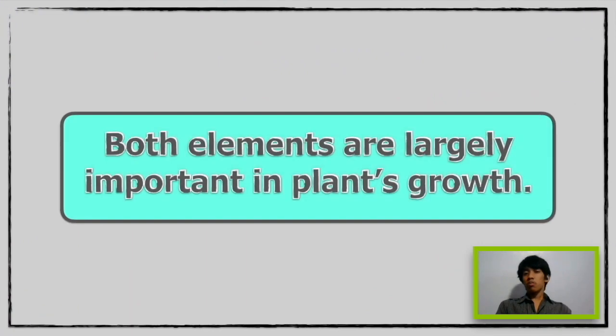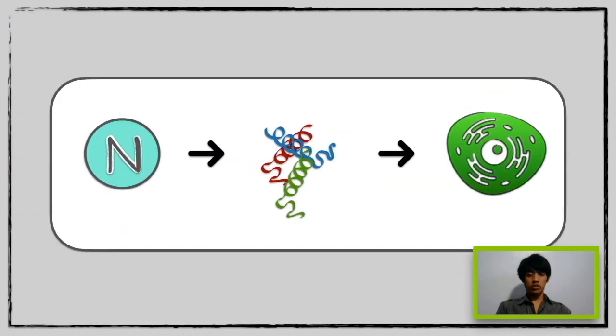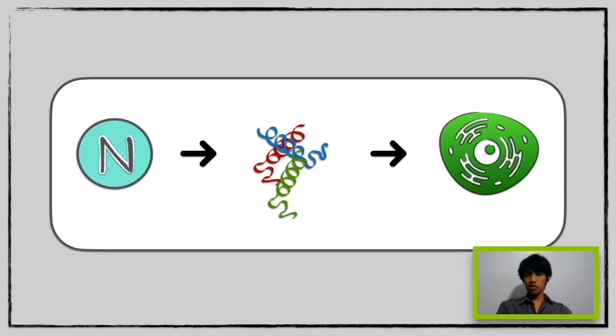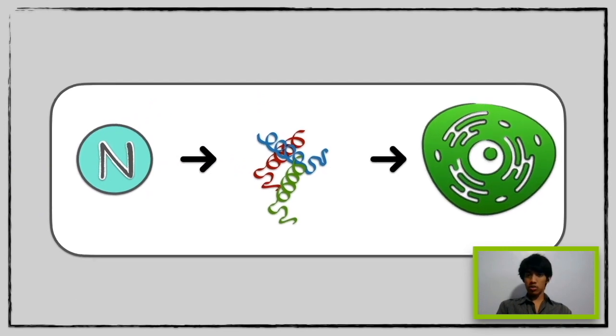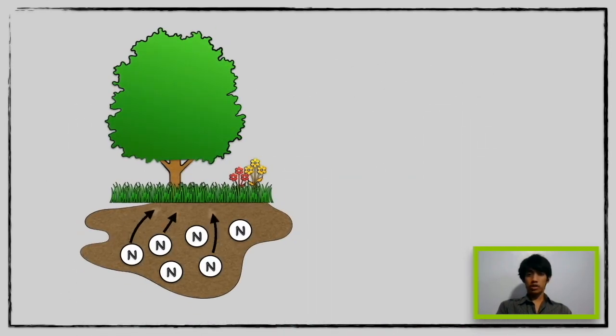Let's see who got the correct answer. Both elements are largely important in plants' growth. Nitrogen is responsible for the plants to make proteins that will make plants able to grow. In a relatable sense, nitrogen is the foundation for its high crop yield. However, when there is an abundance of nitrogen absorbed in the plants, it results in excessive biomass.